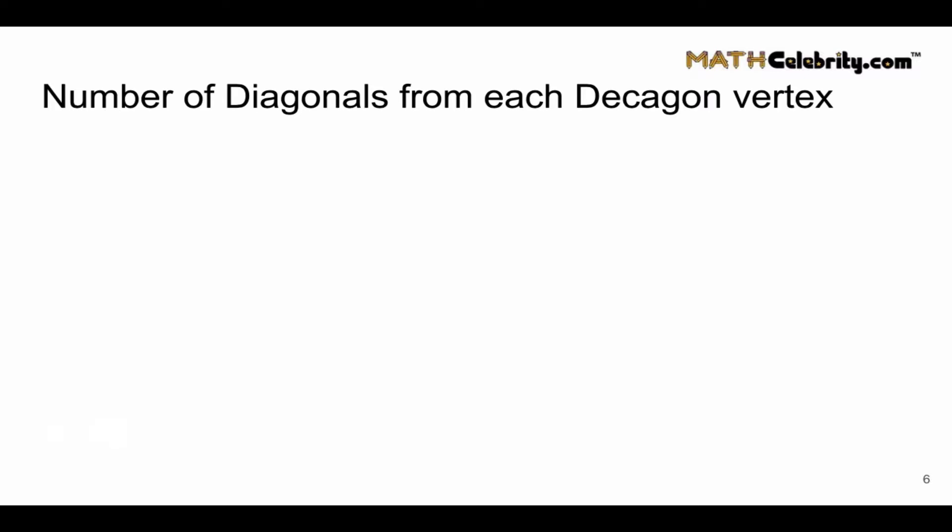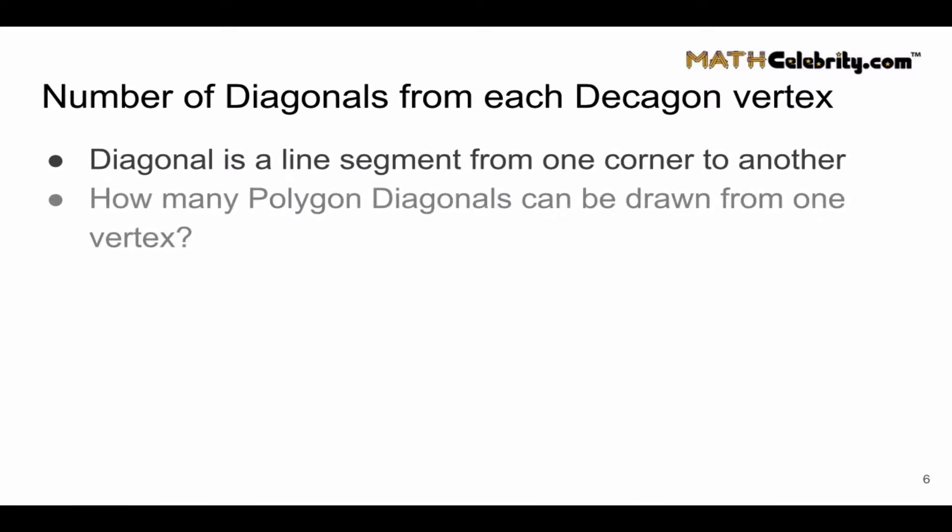What about the number of diagonals from each Decagon vertex? Once again, a diagonal is a line segment from one corner to another. And we want to know how many diagonals can be drawn from one vertex.